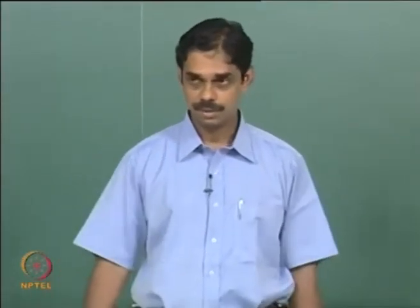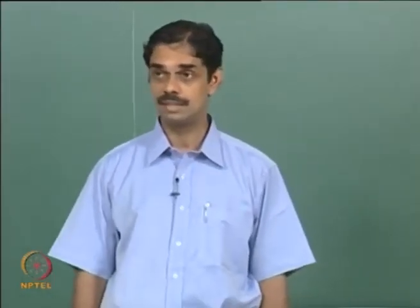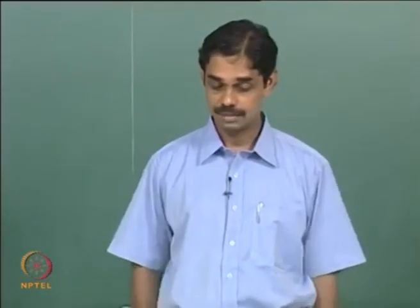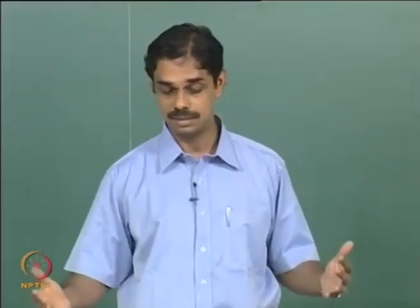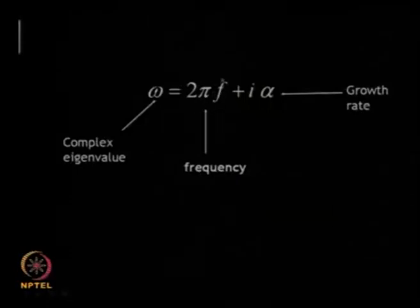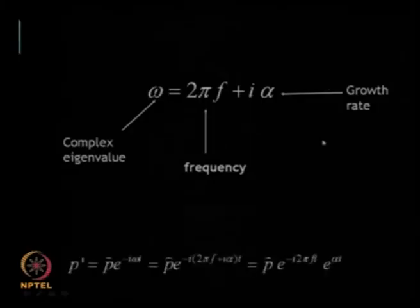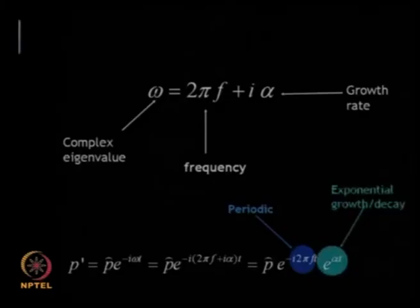Going back we look for the eigenvalues in the classical stability analysis and the eigenvalues go like 2 pi f t plus i alpha. Because it is complex, this is the periodic part corresponding to the frequency f and alpha is the growth rate. You have e power minus i 2 pi f t which is the periodic part and e power alpha t is the exponential decay. So we said that we look at some other type of stability.